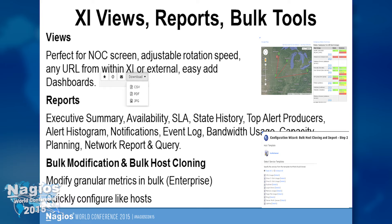Bulk modification is a really cool tool. A great example: if you want to change the check interval on 500 services, you could do it one at a time, or with the bulk mod tool, do it in 45 seconds. Bulk host cloning lets you configure monitoring of one host, test it, then configure 5, 10, 15, or 20 of those hosts with just a few clicks using that host as a template. Plus, XI has a config rollback feature — if you accidentally configure 100 hosts the wrong way, you can roll back as if it never happened.